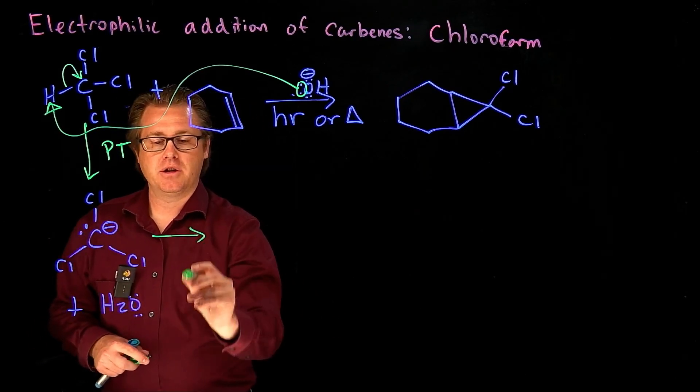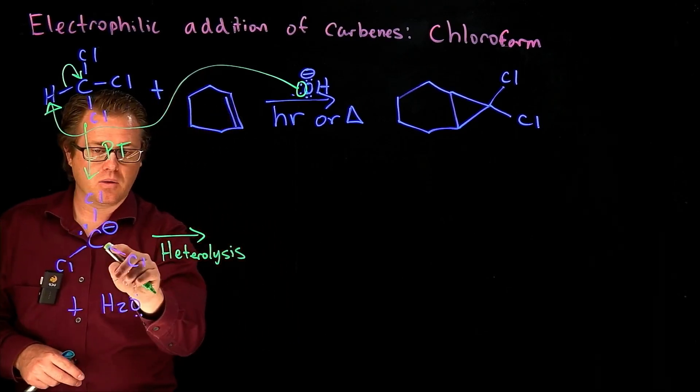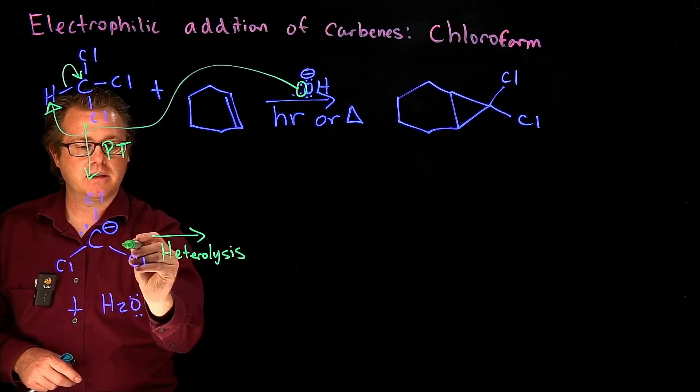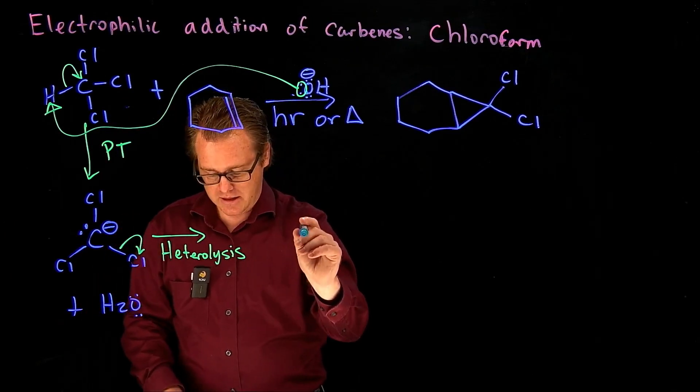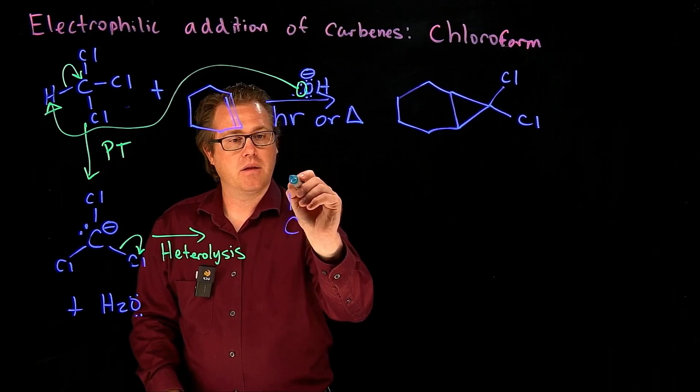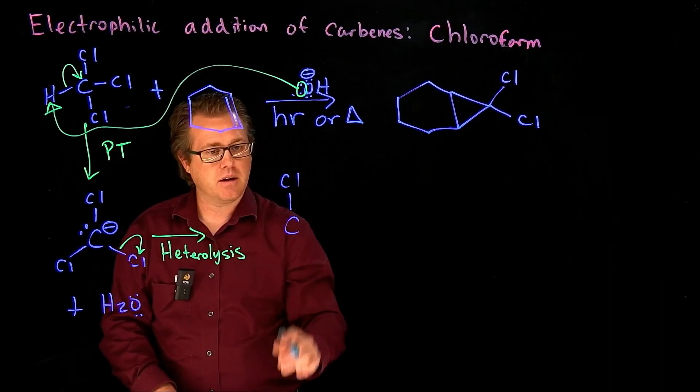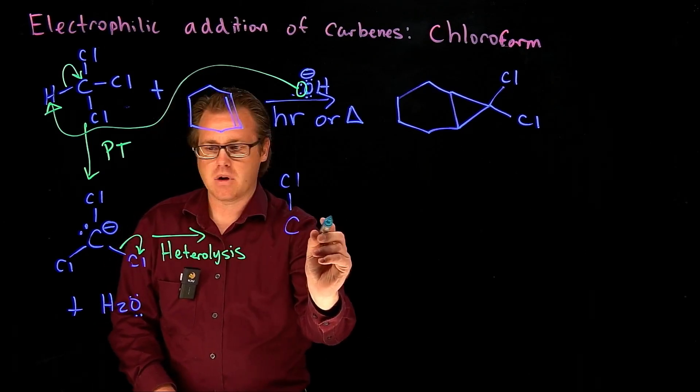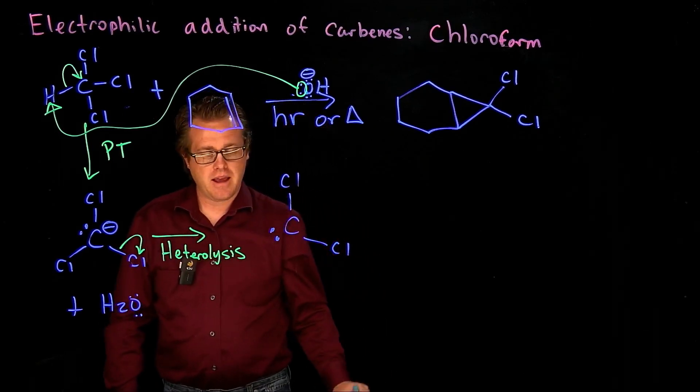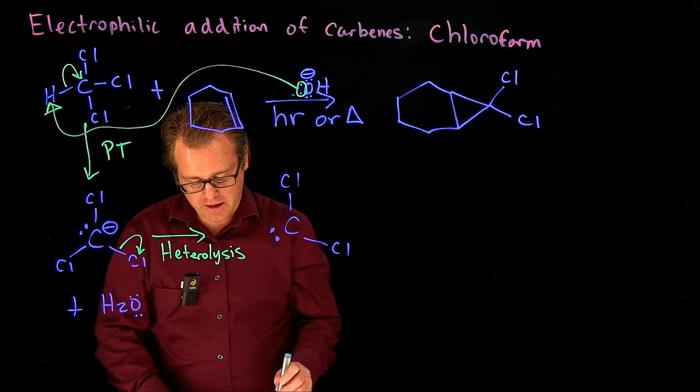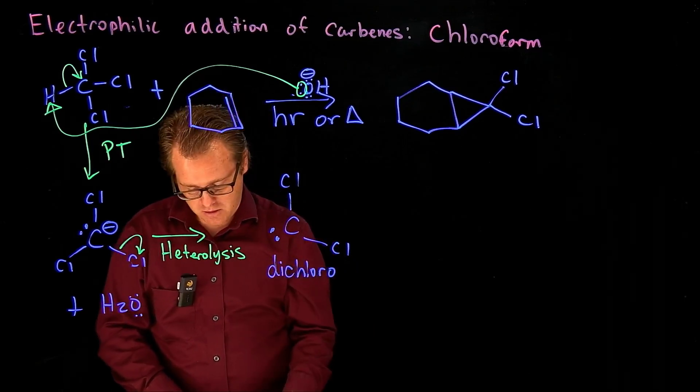Now the next step that we're going to do is a heterolysis. And that is where one of the chlorines, the carbon-chlorine bond is going to break and fall off. Chlorine is a relatively good leaving group. And so we are going to generate this species right here. I'll draw it like, move that chlorine right here. There's our lone pair. And there is our carbene. And we can call this dichlorocarbene right here.